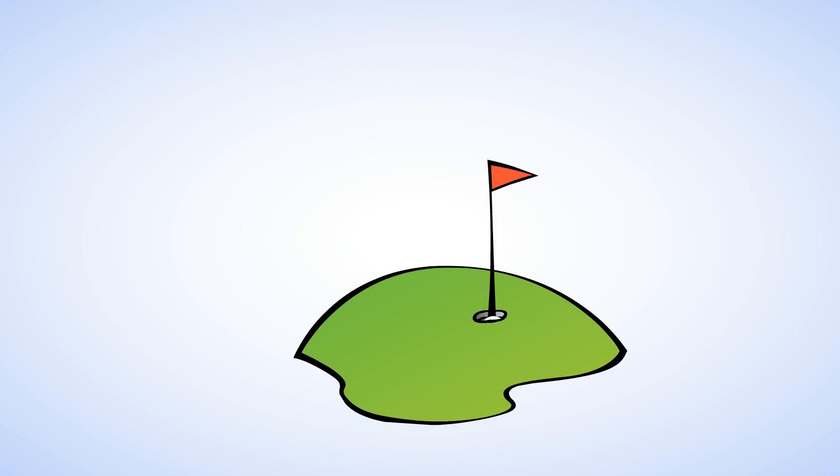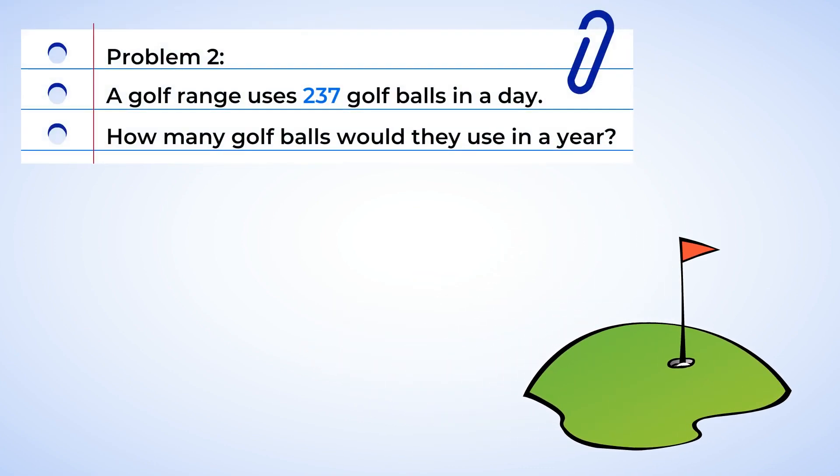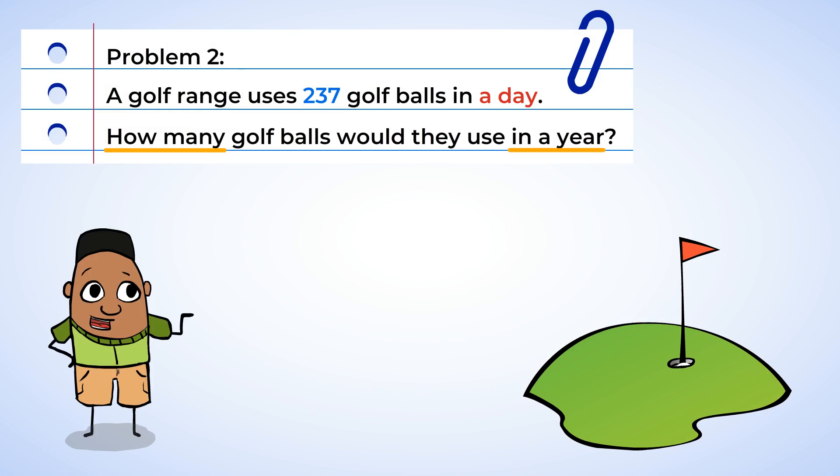Let's go golfing now! A golf range uses 237 golf balls in a single day. How many golf balls would they use in a year? Well, to find out, first, we would need to change one year into days. There are 365 days in a year, and so we will be multiplying 237 by 365.